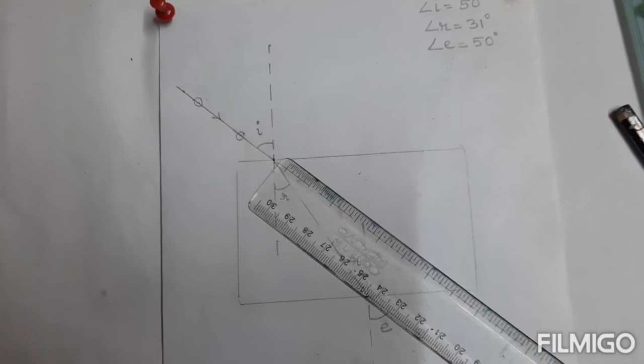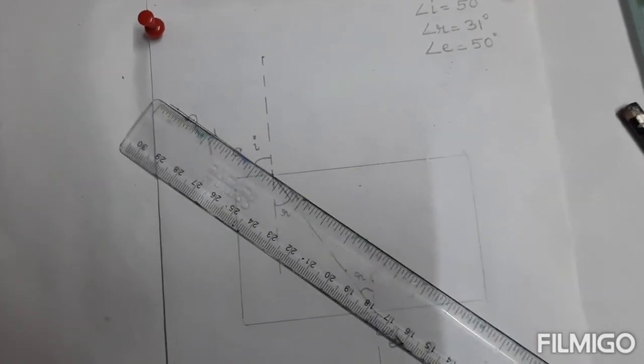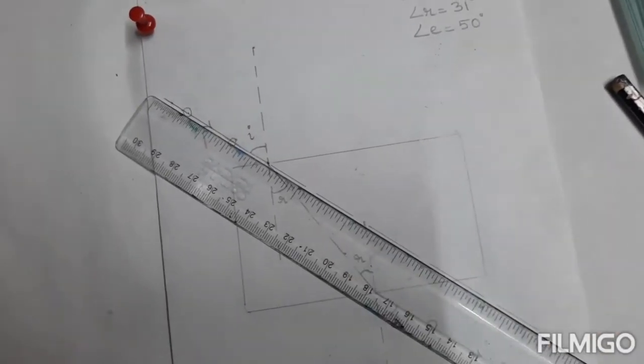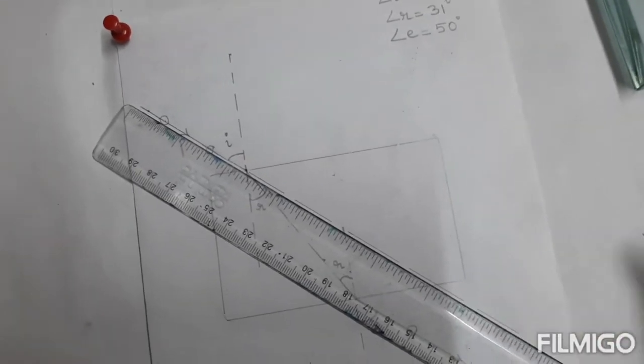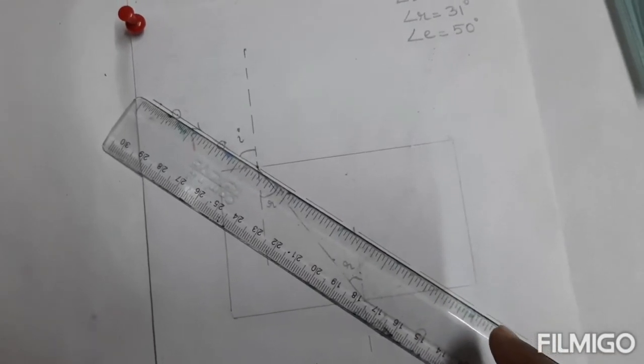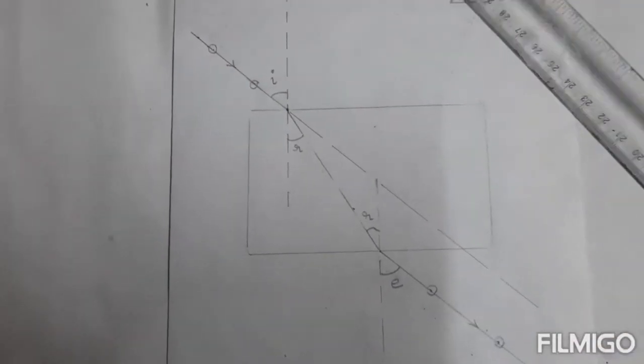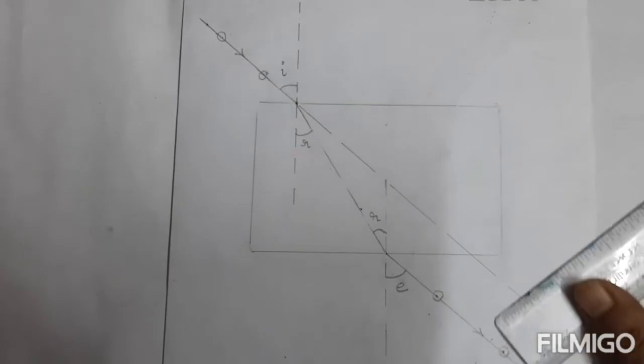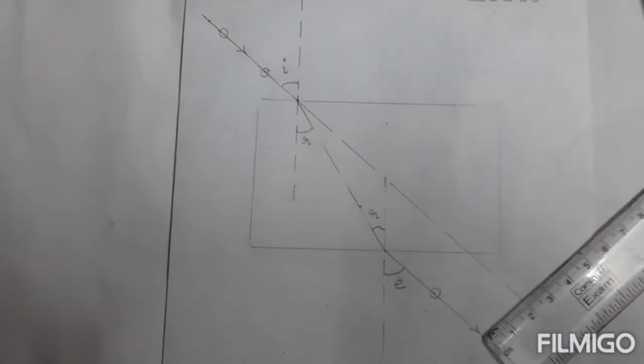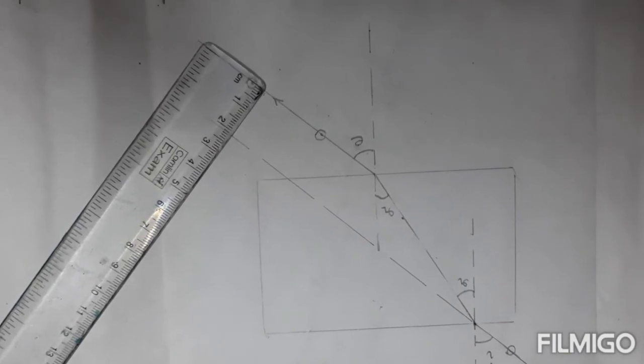If the incident ray passes undeviated we are drawing it, drawing a line till here. So this is the incident ray when it passes undeviated. Now we are going to measure the lateral displacement in this way. And the lateral displacement is 2.2.